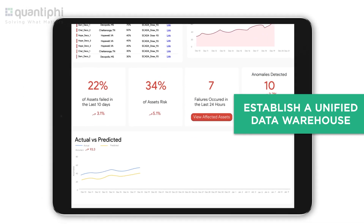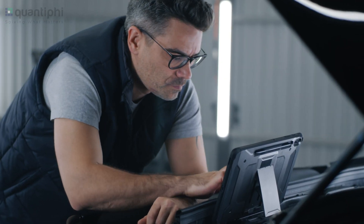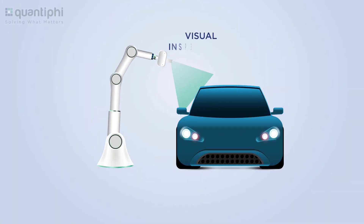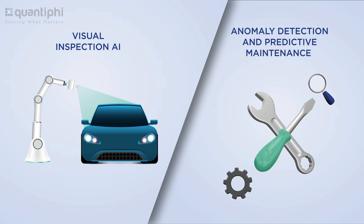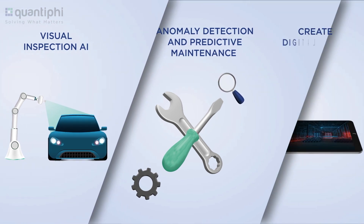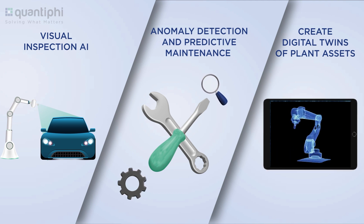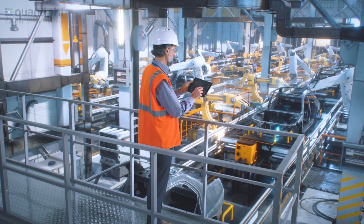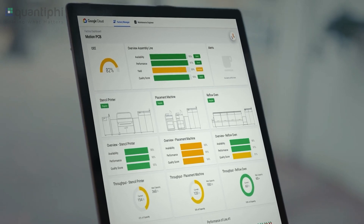It enables data analytics and insights generation, helping manufacturers easily implement AI-driven applications like Visual Inspection AI for Quality Control, Machine Level Anomaly Detection, and Predictive Maintenance for monitoring plant asset health, create digital twins of their plant assets, and many other intuitive applications across the manufacturing value chain — providing better visibility for all stakeholders with user role-based dashboards.